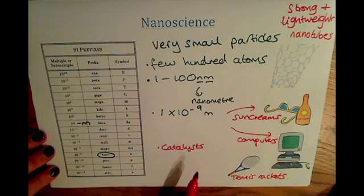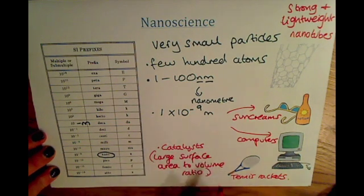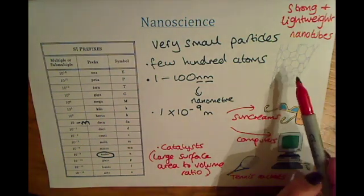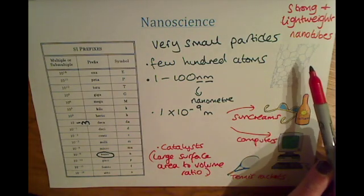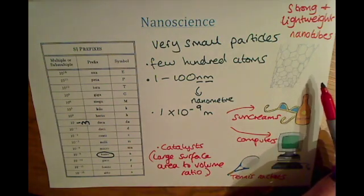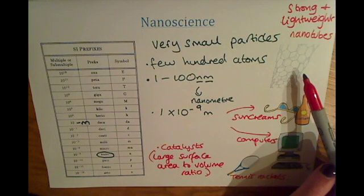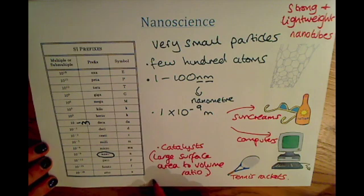Catalysts are things that speed up a reaction without being used up themselves. The reason why nanoparticles are really good catalysts is because they have a large surface area to volume ratio, due to the way that the atoms in these nanoparticles interact. They often form tubular or spherical structures, and they have a very large surface area onto which reactants can come and react to form products.